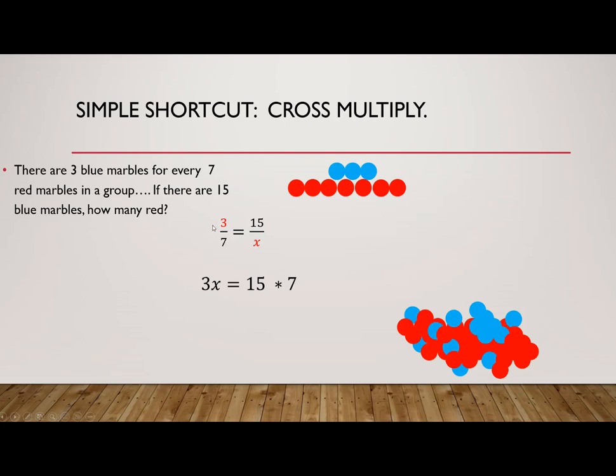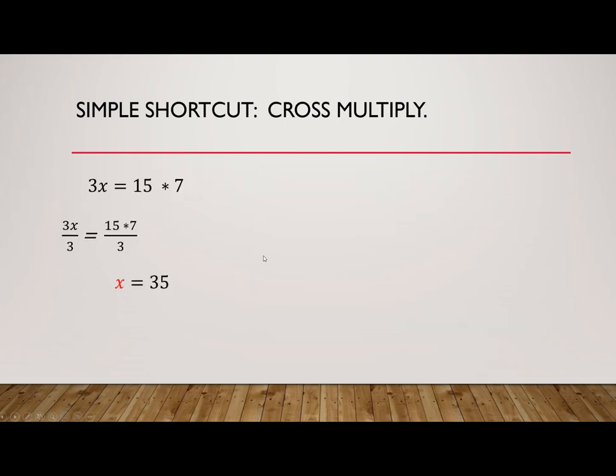We can take the top of the first part, multiply by the bottom of the second part, set that equal to the bottom of the first part times the top of the second part. Divide both sides by 3. X is 35. There are 35 red marbles in that group.